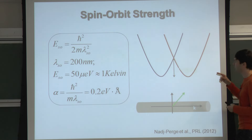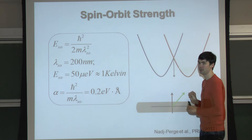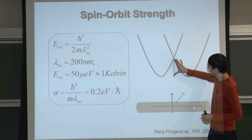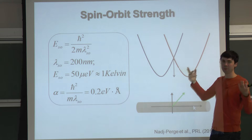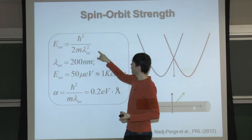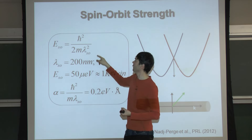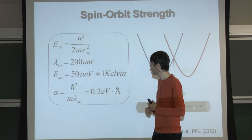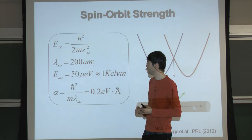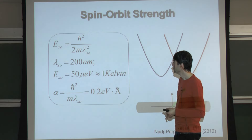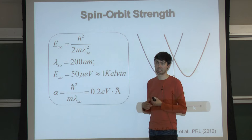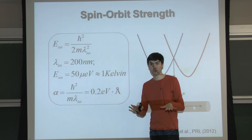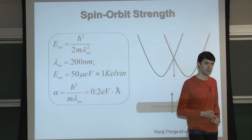What matters for Majoranas is how far the parabolas are split in the one-dimensional band structure - specifically the bulk spin-orbit energy. Taking a spin-orbit length of 200 nanometers, you get a spin-orbit energy of about 50 microvolts, roughly the 1 Kelvin scale. To take advantage of this interaction you have to cool your system below 1 Kelvin.